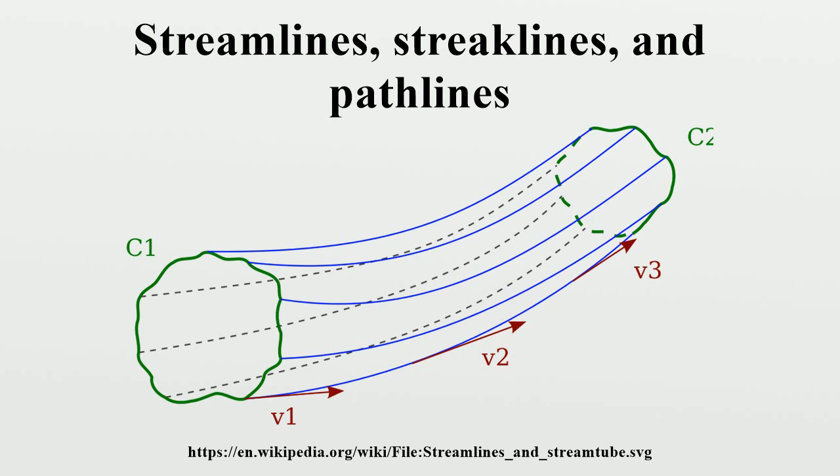Streamlines and timelines provide a snapshot of some flow field characteristics, whereas streaklines and pathlines depend on the full time and history of the flow.